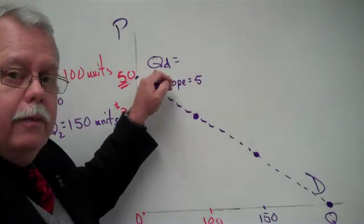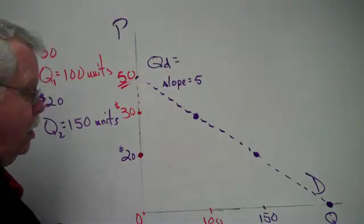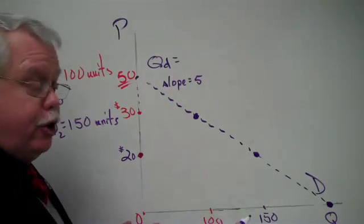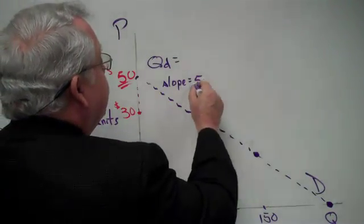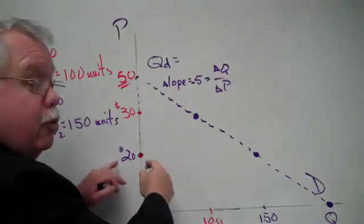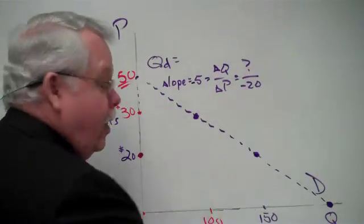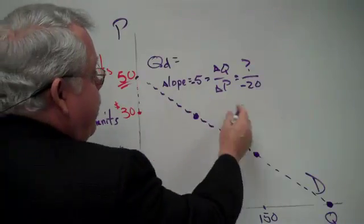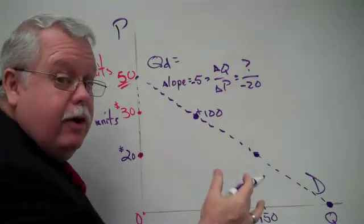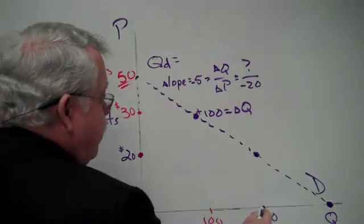What is the quantity when there is a price of zero? When the price goes from $20 to zero, the quantity goes from 150 out to some other quantity. We know the slope, negative five, is the change in quantity over the change in price. We're going to drop the price by $20, so the change in price is negative 20. Negative five equals the change in quantity over negative 20. Cross-multiplying, we get positive 100 — minus five times minus 20 — equals the change in quantity. So when the price drops 20, the quantity increases by 100.